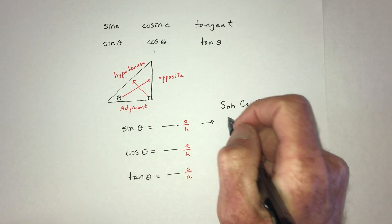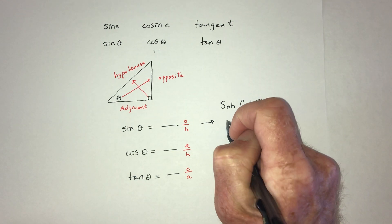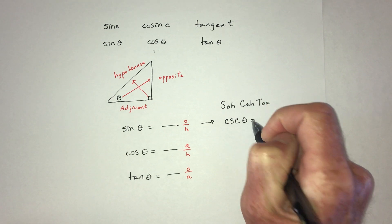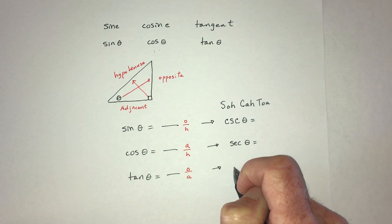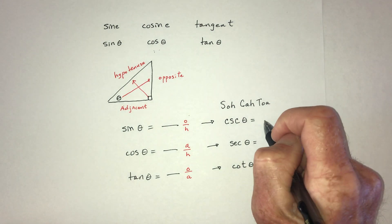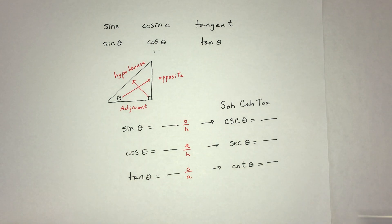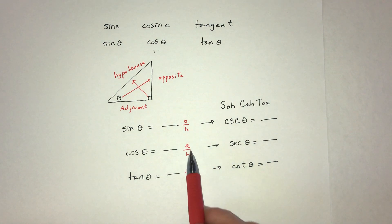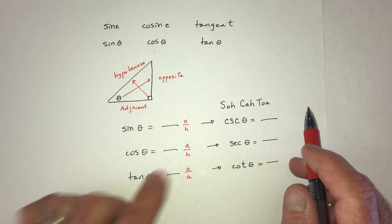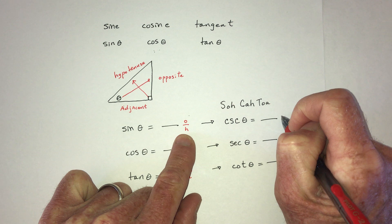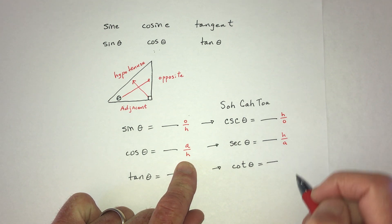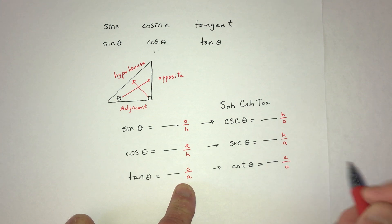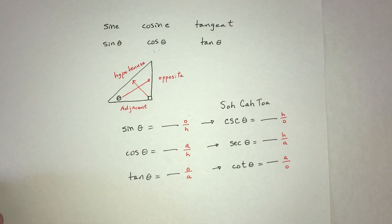The last three trig functions: going straight across from sine gives you cosecant, across from cosine gives secant, and across from tangent gives cotangent. These are simply the reciprocals of the first three. So sine is O over H, cosecant is H over O; cosine is A over H, secant is H over A; tangent is O over A, cotangent is A over O.